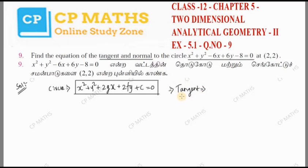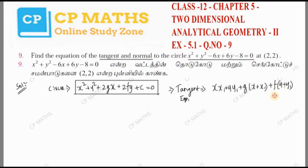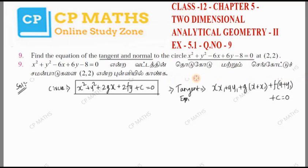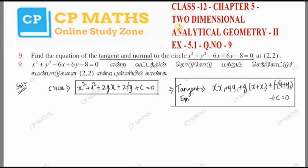Now, where do we have the tangent equation? The tangent equation formula is: xx₁ plus yy₁ plus g into (x plus x₁) plus f into (y plus y₁) plus c equal to 0. You need to test the tangent equation, and then the normal equation — that is easy, so I will talk about that first.